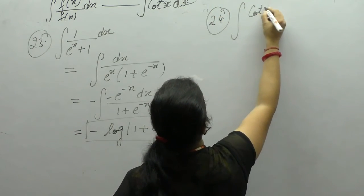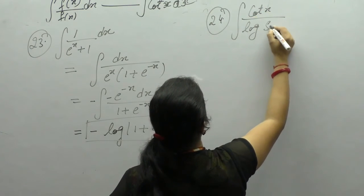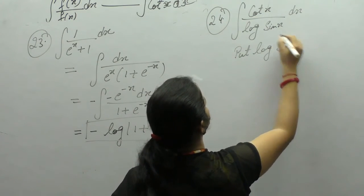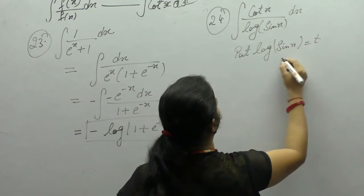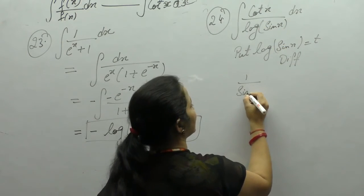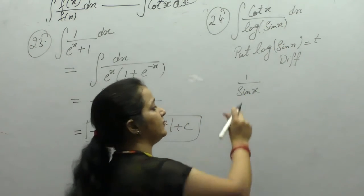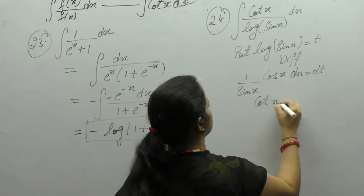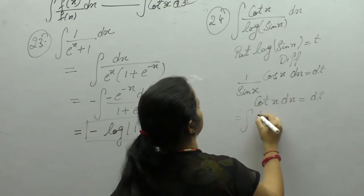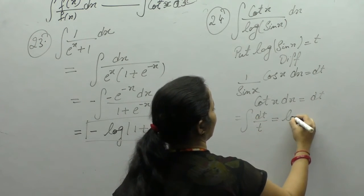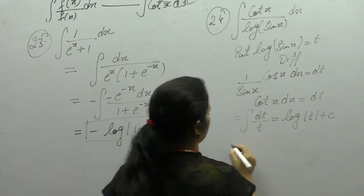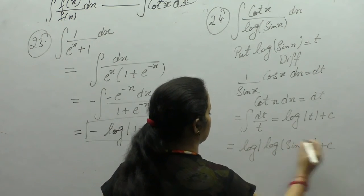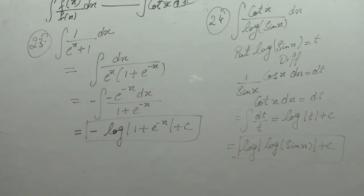Next is integration of cotx/log(sinx). We put log(sinx) = t. The derivative of log(sinx) is (1/sinx)·cosx = cotx. So cotx dx = dt/t. The integral of 1/t is log(t), giving log(log(sinx)) + c.